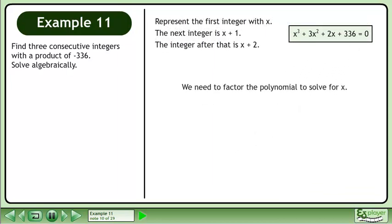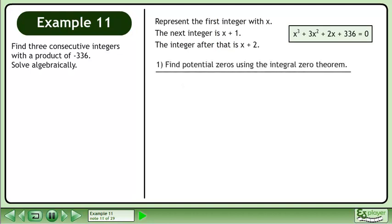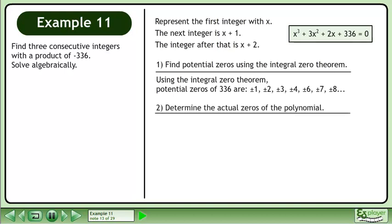We need to factor the polynomial to solve for x. First, find potential zeros using the integral zero theorem. Using the integral zero theorem, potential zeros of 336 are listed. Next, determine the actual zeros of the polynomial.